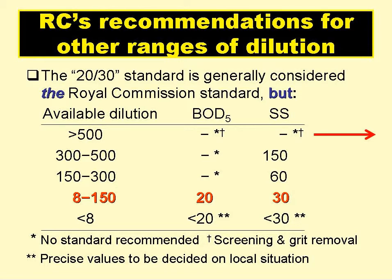Actually, the 20:30 standard wasn't the only one recommended by the Royal Commission. The commissioners recommended a range of standards depending on the dilution available. They applied their 20:30 standard to dilutions in the range 8 to 150. For dilutions less than 8, the precise values for BOD and suspended solids were to be set based on the local situation. For dilutions greater than 150, they recommended only standards for suspended solids. And when the dilution was greater than 500, no standards were deemed necessary, and the wastewater only required screening and grit removal.